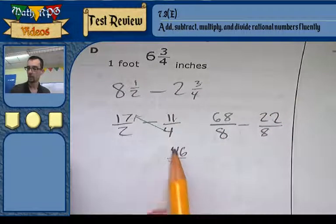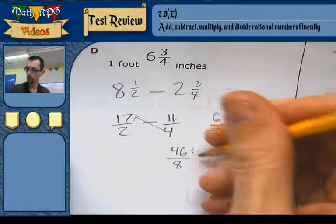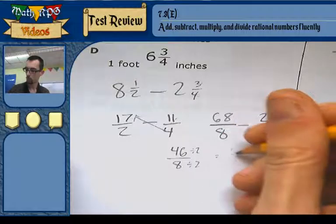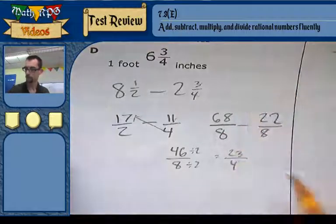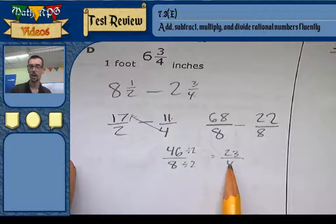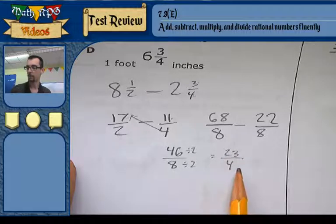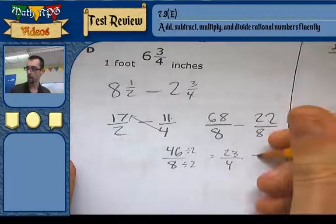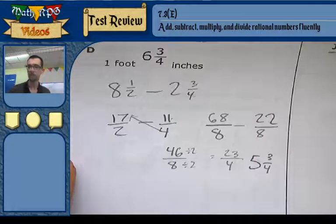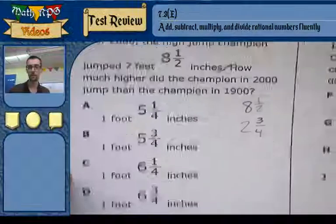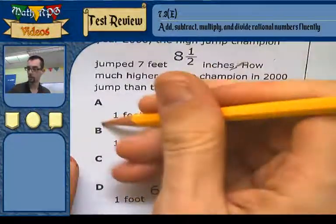My answer is 46 eighths. Now I can reduce this, they're both even. So if I divide by 2, I get 23 fourths. Alright, now I'm going to turn this back into a mixed number by dividing it. So 4 divides into 23 five times with remainder of 3. My answer is 5 and 3 fourths, 1 foot 5 and 3 fourths inches, which is choice B.